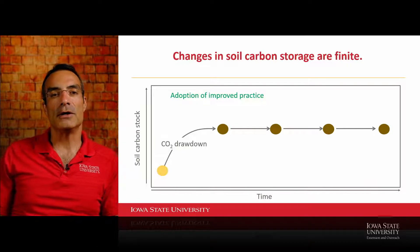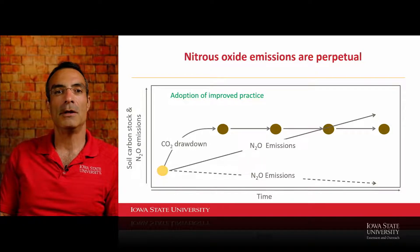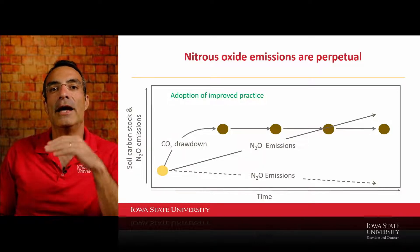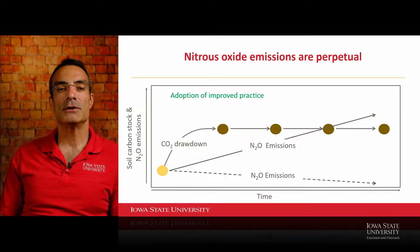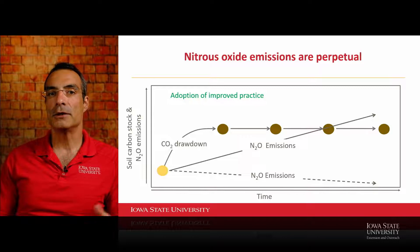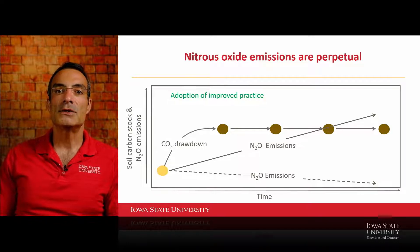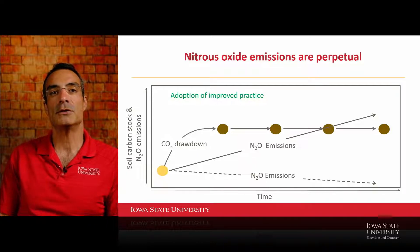That contrasts with nitrous oxide and methane. With nitrous oxide, if a management change causes a change in emissions — either increasing or decreasing — that's a perpetual flux. Every year we keep the system as it is, that emission accumulates cumulatively. For example, if we changed a management practice that led to an increase in soil carbon stocks but also led to an increase in nitrous oxide emissions, at some point the cumulative nitrous oxide emissions from that change would surpass the amount of carbon stored in the soil in terms of net greenhouse gas potential to the atmosphere.